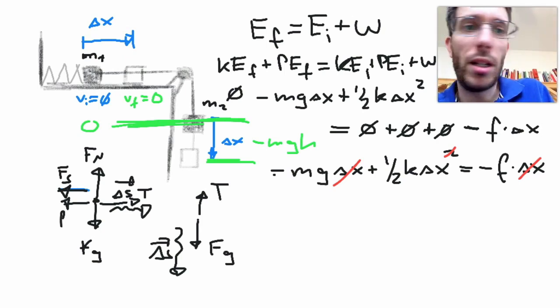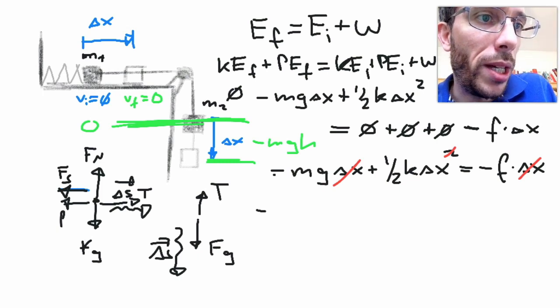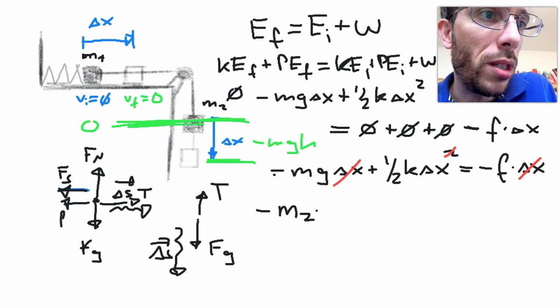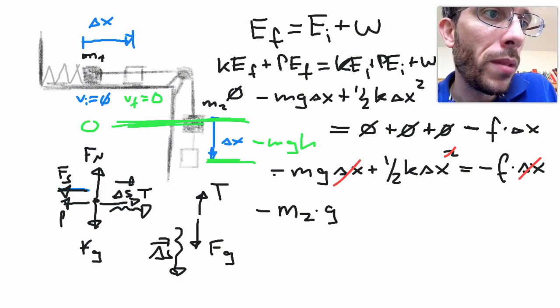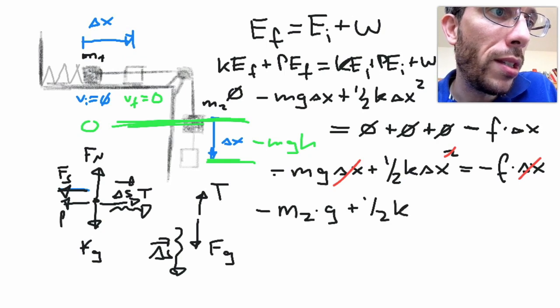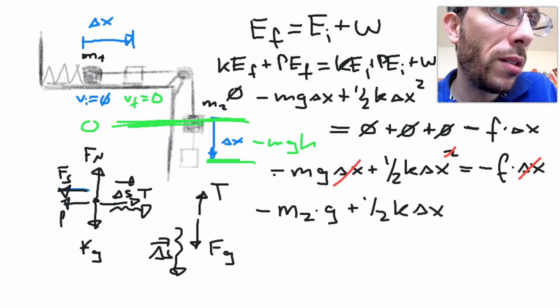So with this, I will get minus m, I actually should be specific, this is m2 times g plus 1 half k delta x equals minus the force of friction.